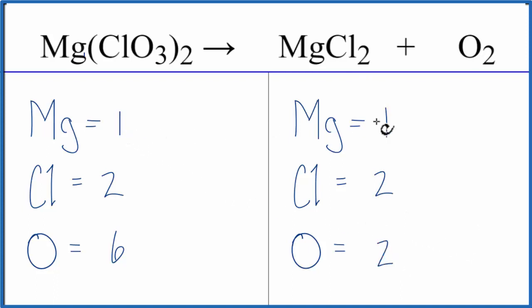Looking at the equation, magnesiums are the same, chlorines are the same, the only difference is the oxygens, and that's pretty easy to fix.